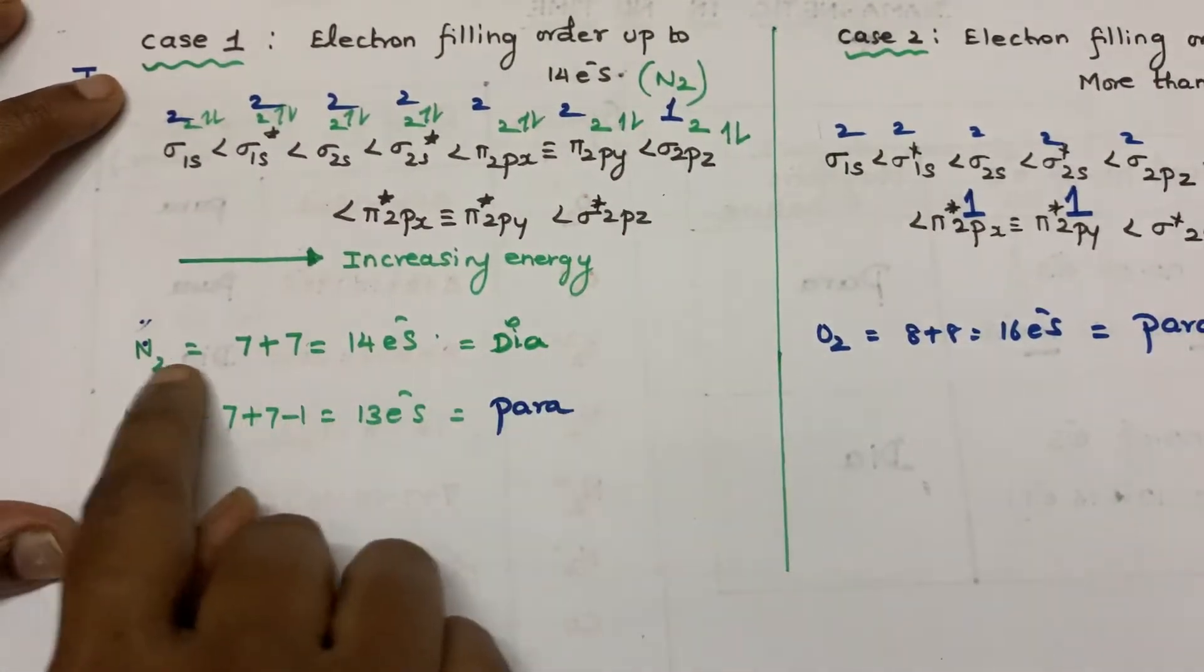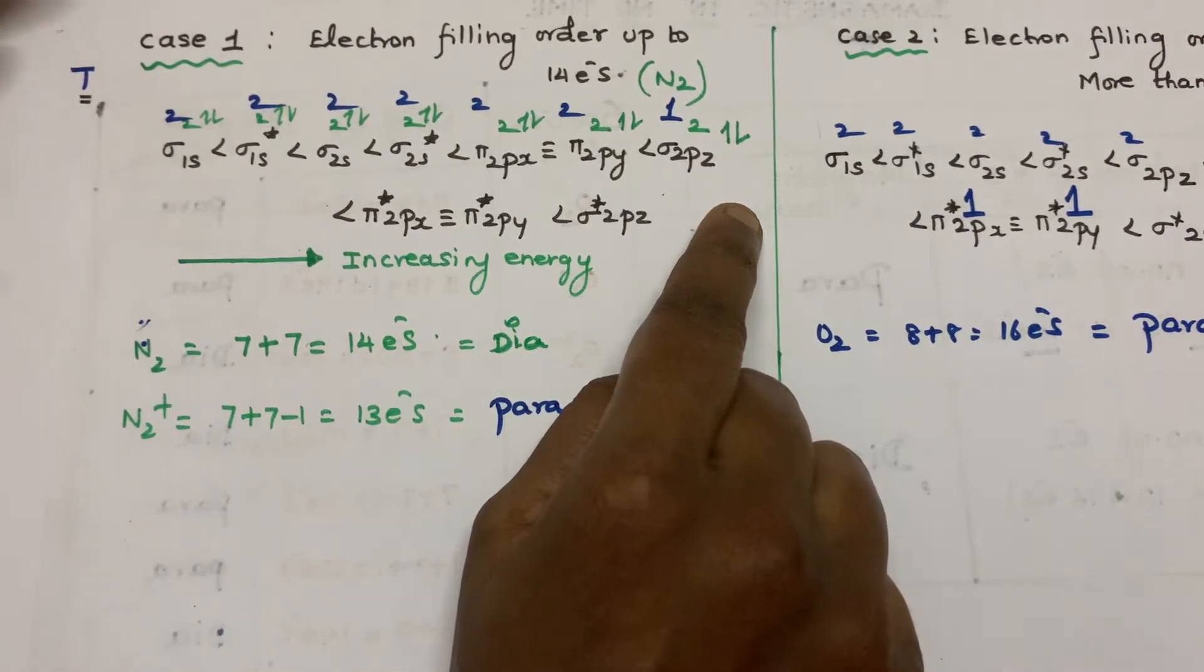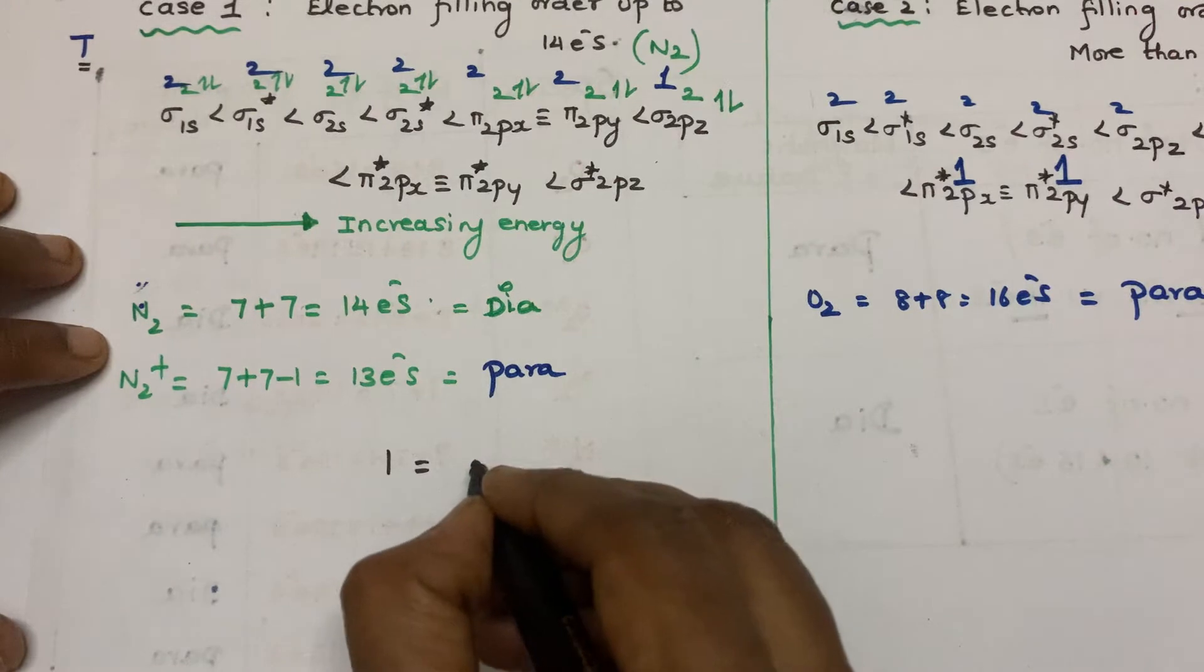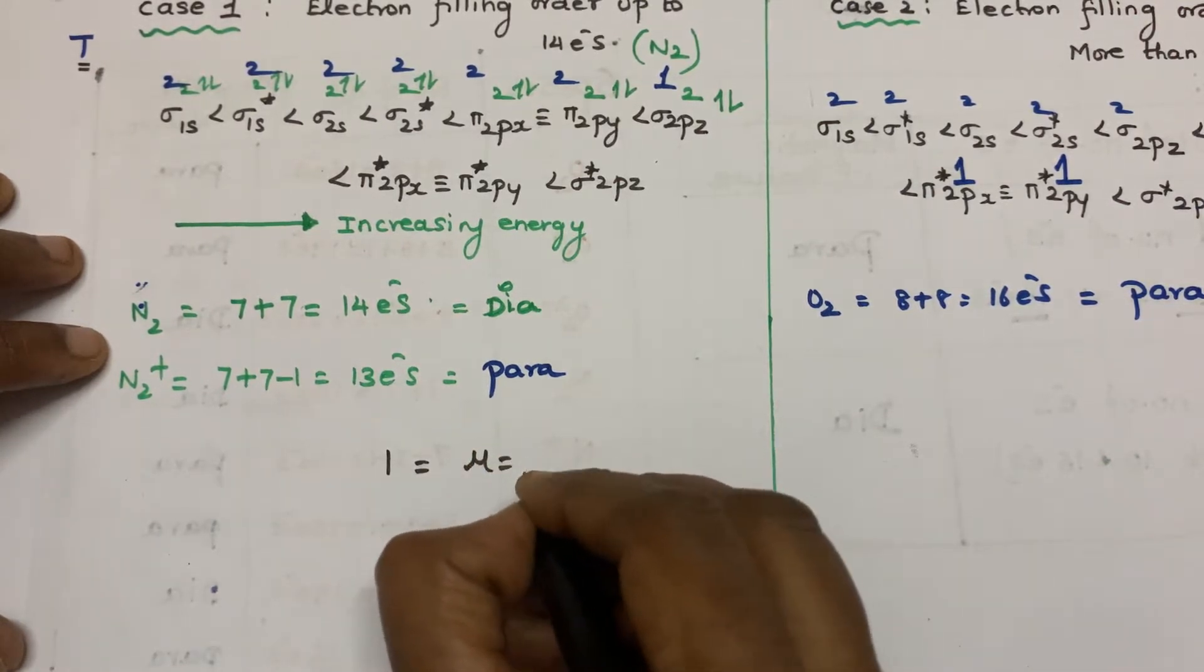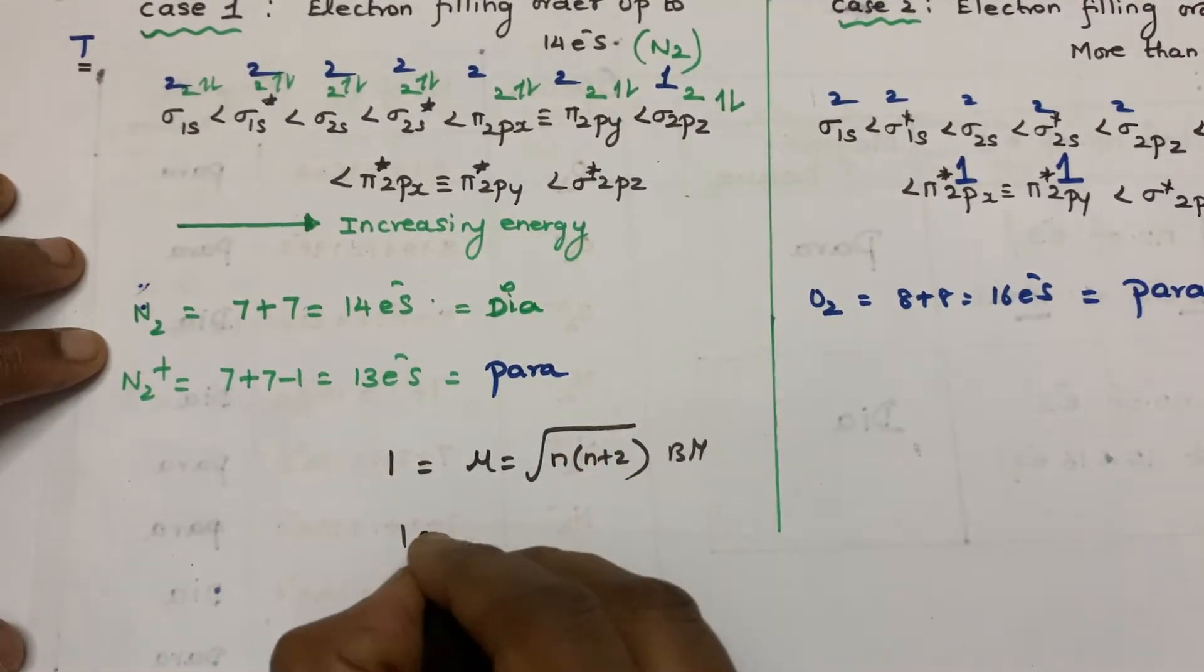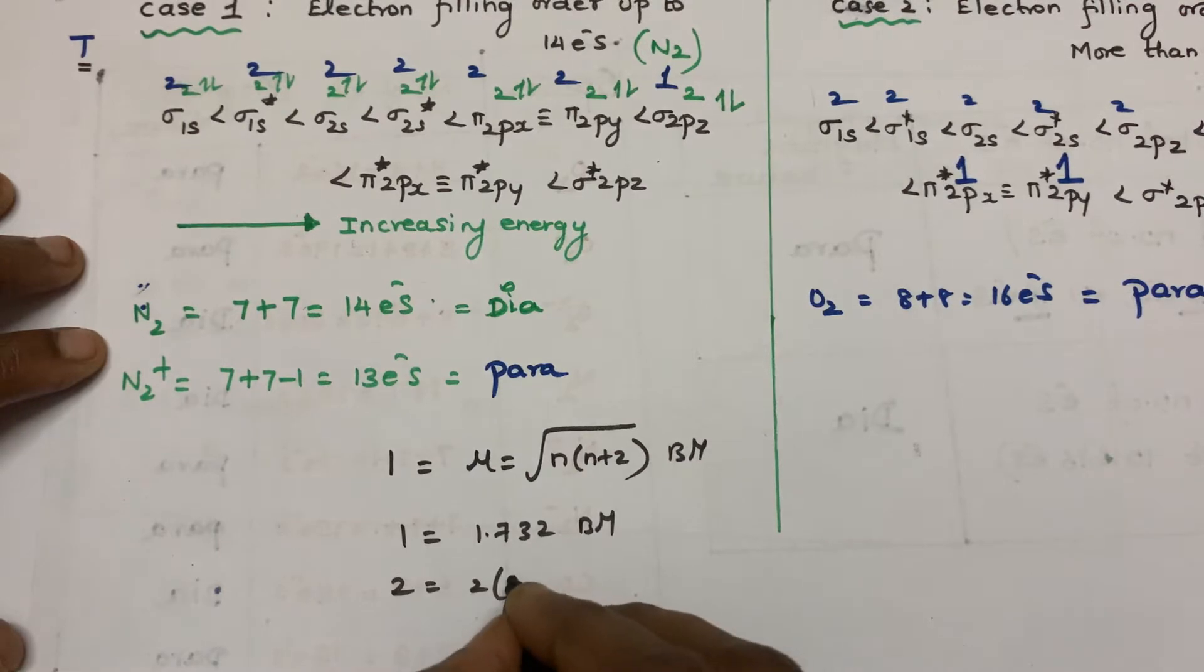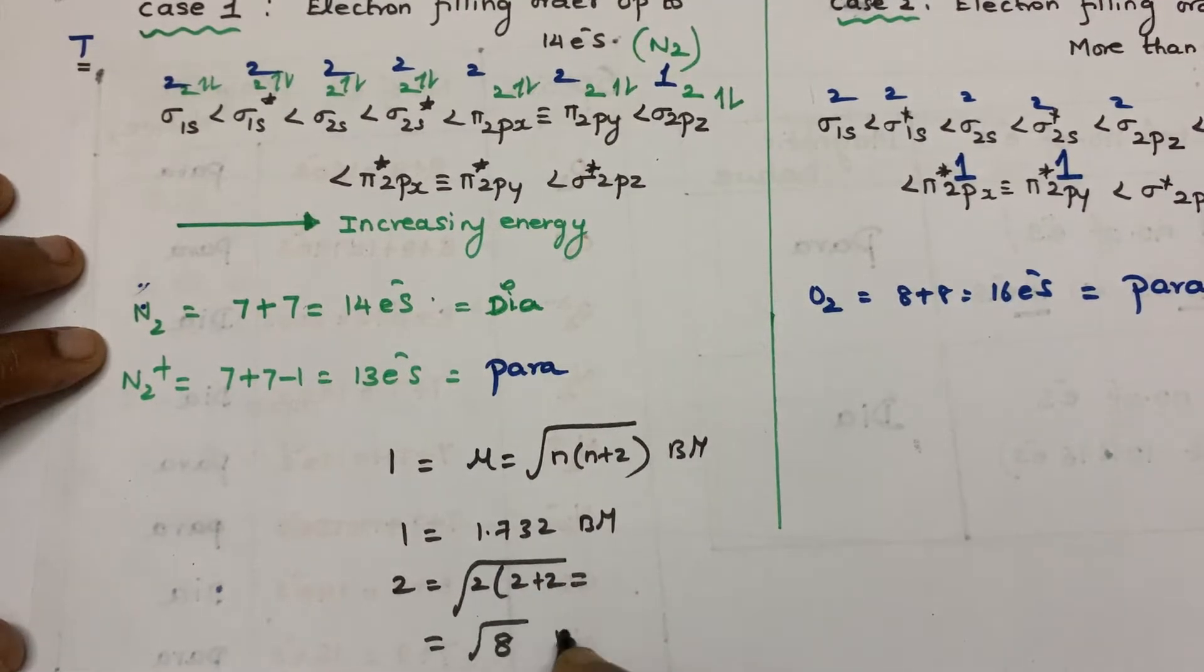So if we get no unpaired electrons, it will not show any magnetic moment. But if it has unpaired electrons, if it has one unpaired electron, we will apply the formula. So mu is equal to root of n into n plus 2 Bohr magneton. So if it has one unpaired electron, you will get 1.732 Bohr magneton. If it is 2, you will apply 2 into 2 plus 2, so it will come root 8 Bohr magneton like that.